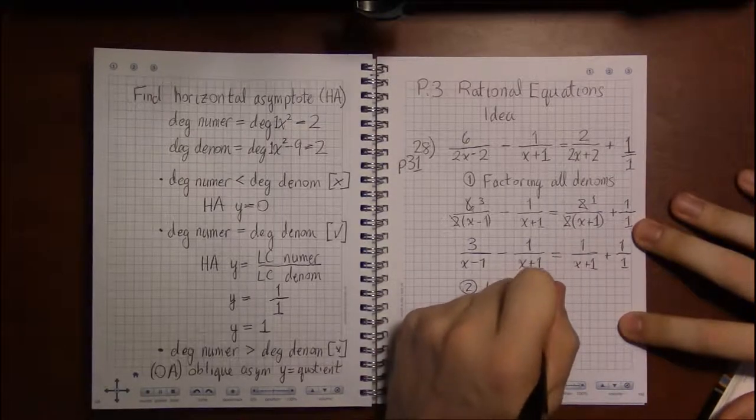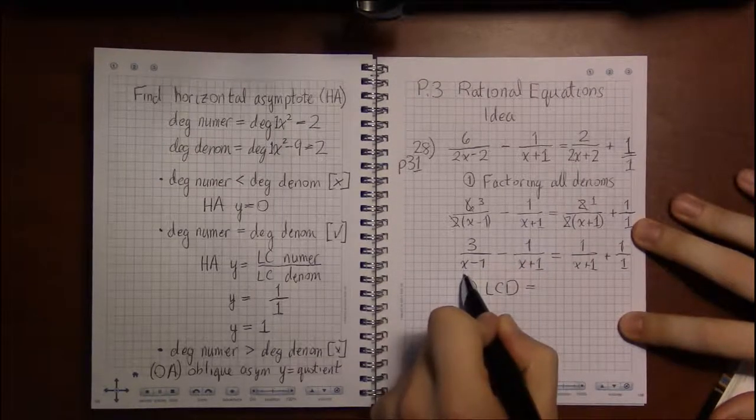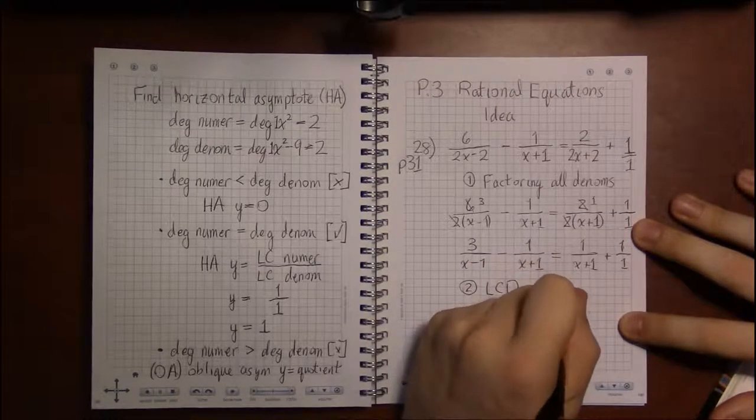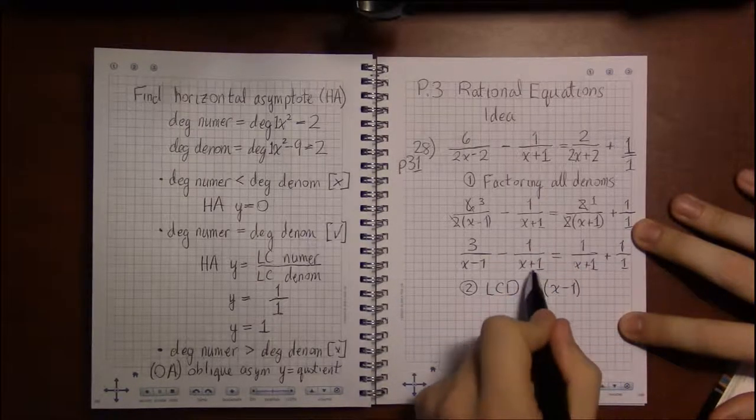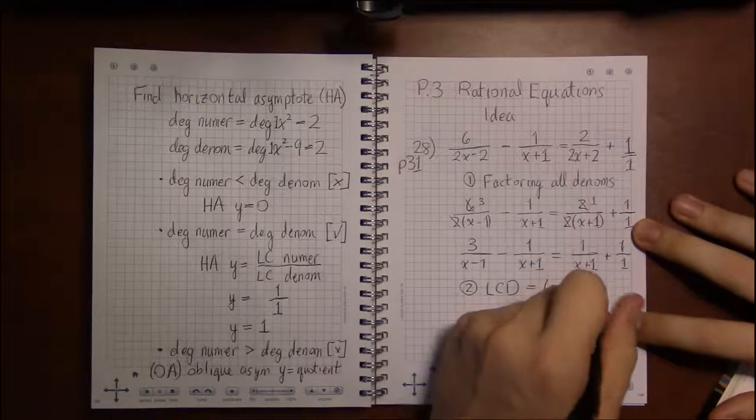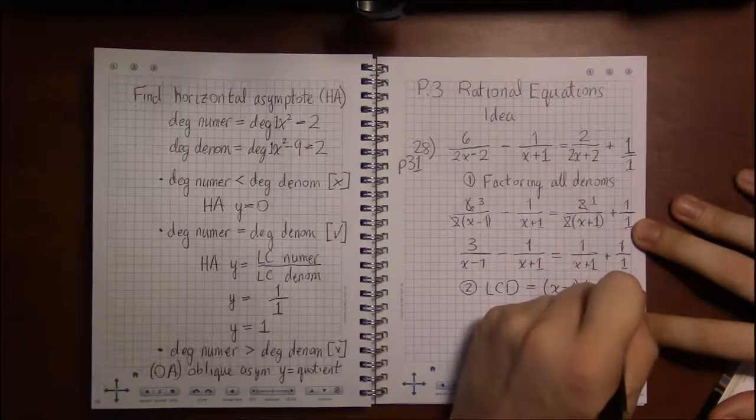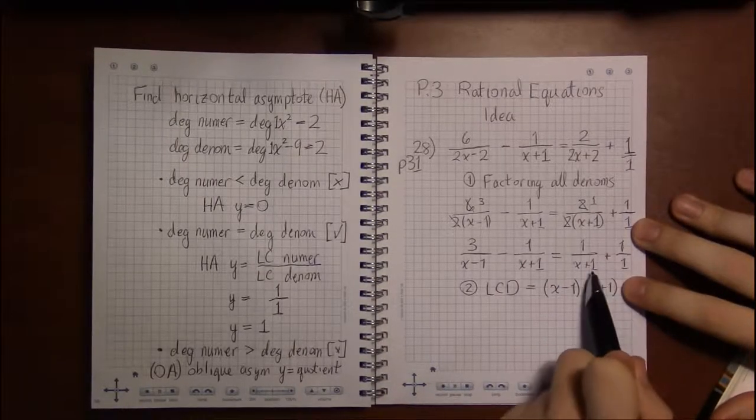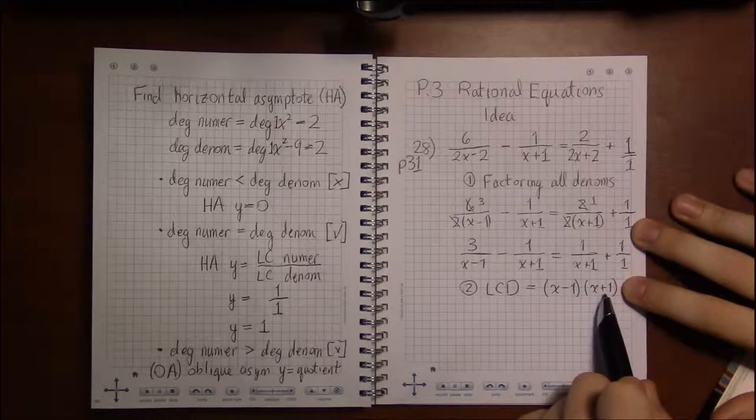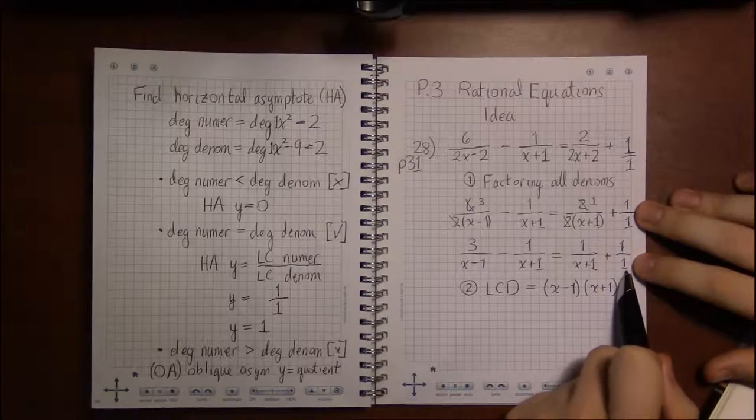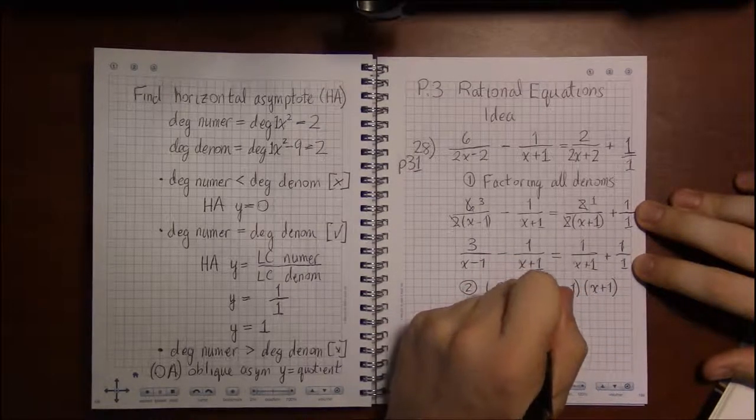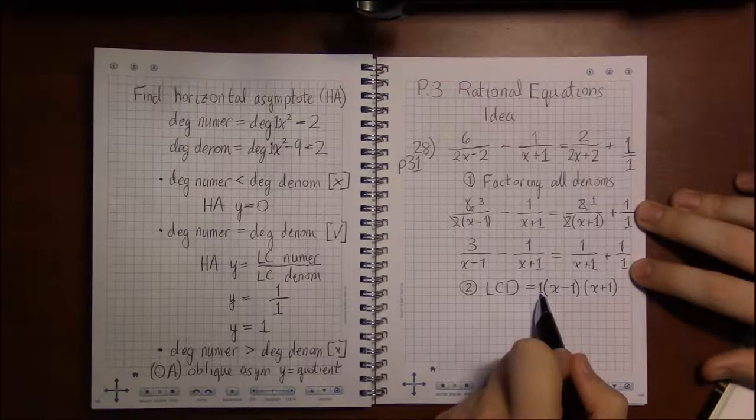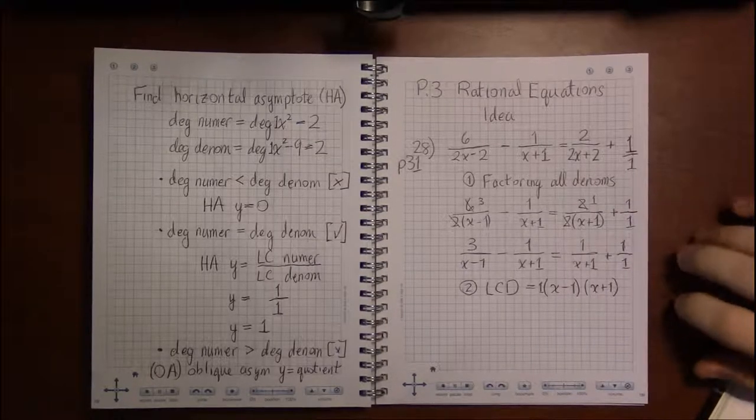Our least common denominator, let's see. The first denominator x minus 1 needs to go in there. I have x minus 1 but not x plus 1, so I've got to throw an x plus 1 into my LCD. I already have x plus 1 in my denominator, so I don't need to repeat it. And 1 is always in my denominator, 1 times anything is still itself. So this is my least common denominator.